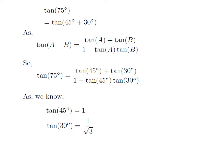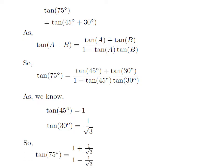As we know, tan(45°) is equal to 1 and tan(30°) is equal to 1/√3. So we replace these values in the above formula. tan(75°) is equal to 1 plus 1/√3 in the numerator, and in the denominator it is 1 minus 1 times 1/√3, which becomes 1 minus 1/√3.